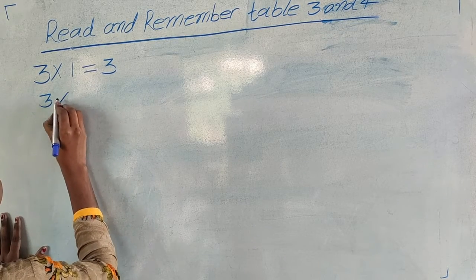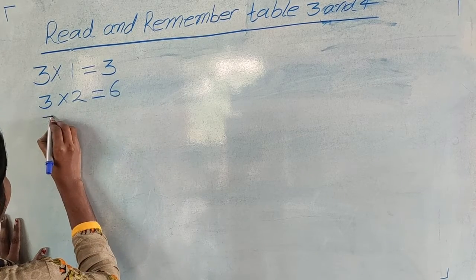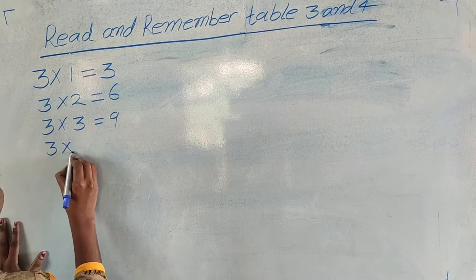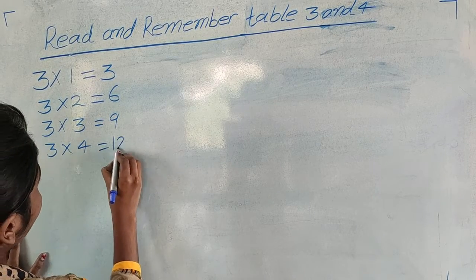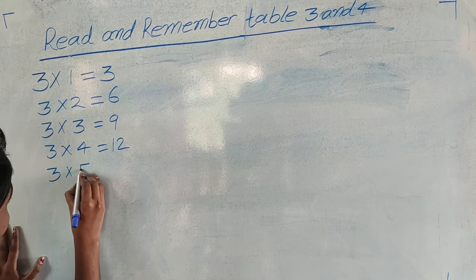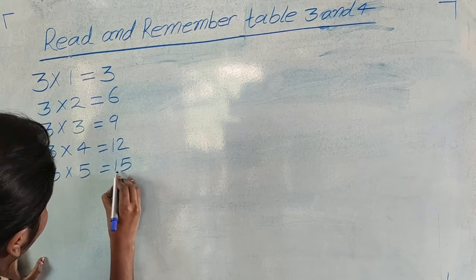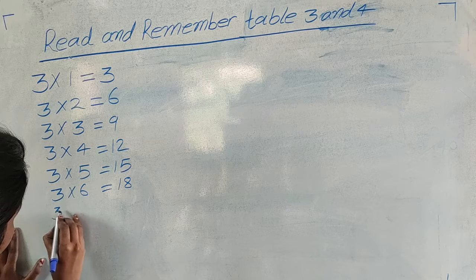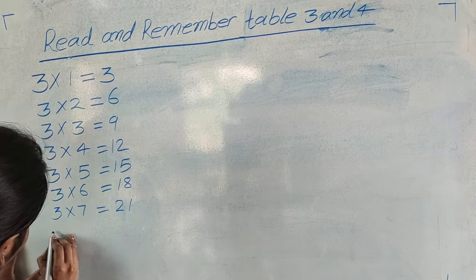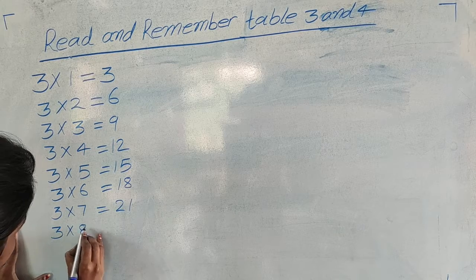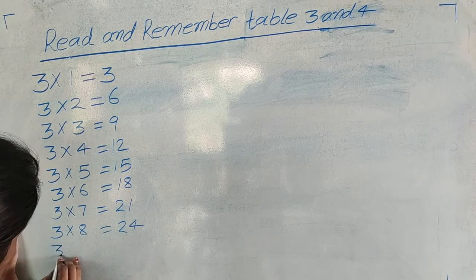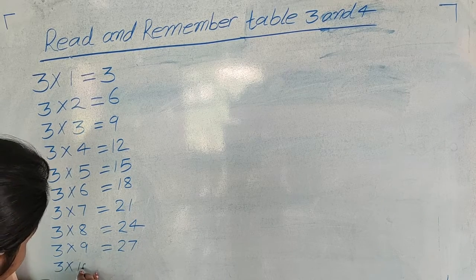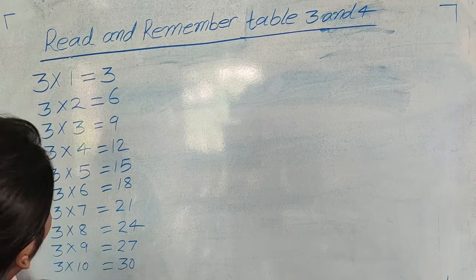3 × 2 = 6, 3 × 3 = 9, 3 × 4 = 12, 3 × 5 = 15, 3 × 6 = 18, 3 × 7 = 21, 3 × 8 = 24, 3 × 9 = 27, 3 × 10 = 30. यह हो गया हमाना 3 का टेबल।